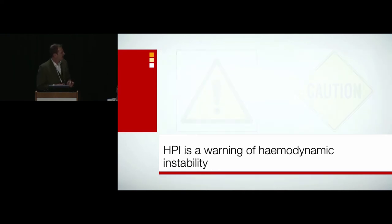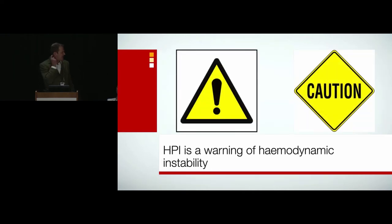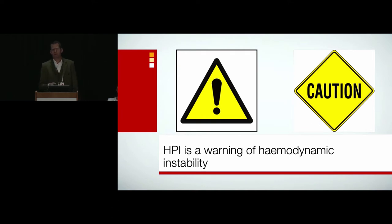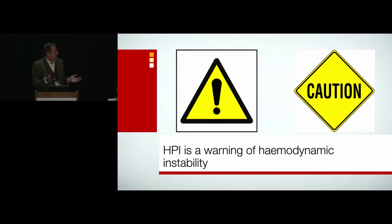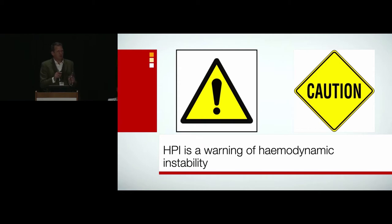Going slightly off track — and it probably raises a few eyebrows from the Edwards folks — it's more than this. Saying that HPI is just an algorithm that predicts hypotension is far too simplistic. It is a measure of hemodynamic instability. It's trying to quantify instability within this biological system, which in most people will lead to hypotension, but not all. And it changes before we see any change in the common things we measure.